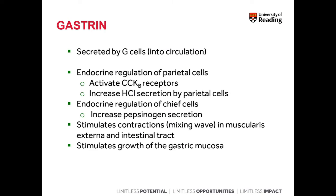To sum up the main hormones produced by the stomach: gastrin is secreted by G cells and is an endocrine hormone secreted directly into blood circulation. It regulates parietal cells by directly activating cholecystokinin B receptors, promoting secretion of hydrochloric acid. It's also involved in the endocrine regulation of chief cells, leading to increased secretion of pepsinogen. It also stimulates contraction of the muscularis externa of the stomach and duodenal tract, and stimulates growth of the gastric mucosa.